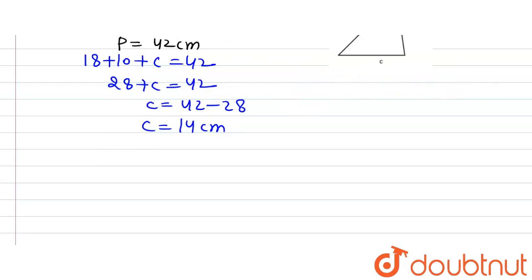So on solving it further we will get c is equal to 14 cm. So now we have a, b and c. Let's find out what will be the value of s. We know that s or semi-perimeter is equal to a plus b plus c divided by 2 which will be equal to perimeter divided by 2.